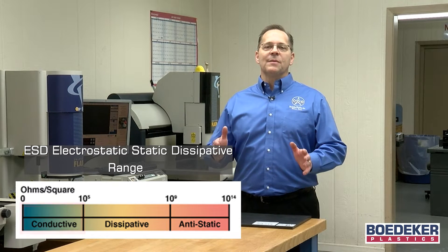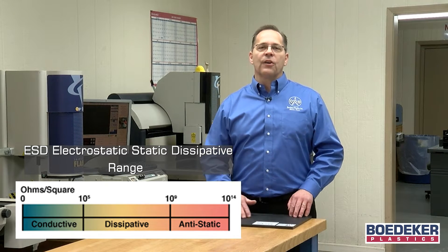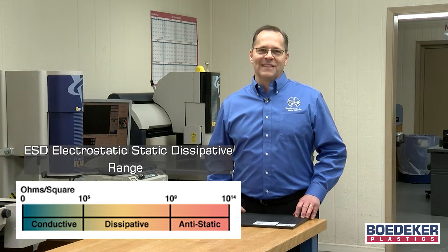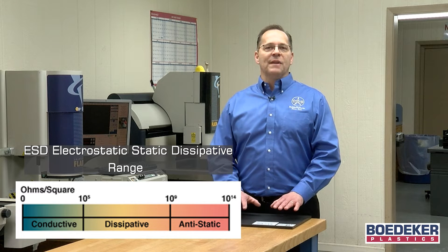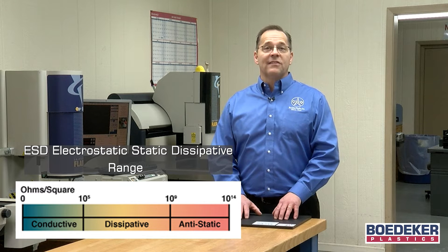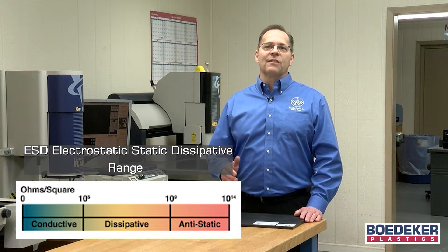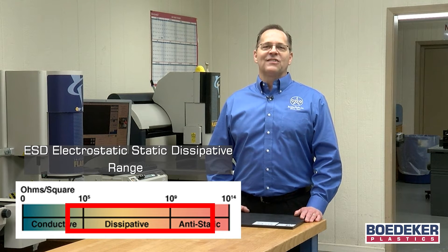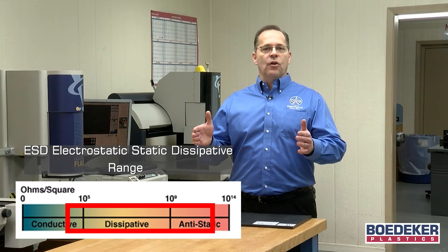The more conductive a material, the more readily the current will flow across the material's surface and the lower the surface resistivity measurement. ESD plastics are materials that fall between being insulative and being conductive. Users of ESD materials are typically looking for these materials to have a surface resistivity somewhere between 10 to the 4th and 10 to the 12th ohms per square.